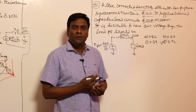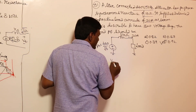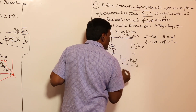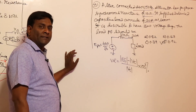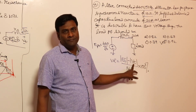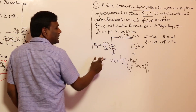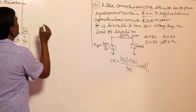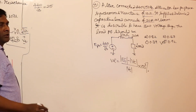Zero voltage regulation means: voltage regulation = (|EF| − |VT|)/|VT| × 100% = 0. So EF equals VT. How much is VT? Terminal voltage is 440/√3 = 254.04 volts.